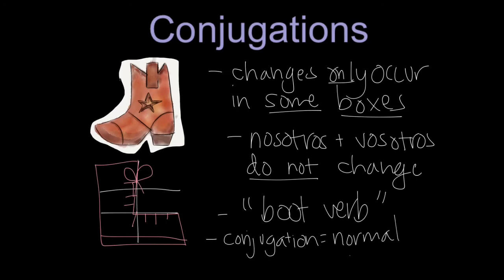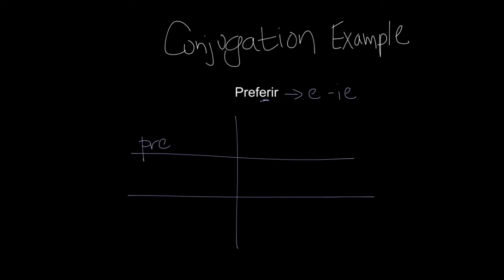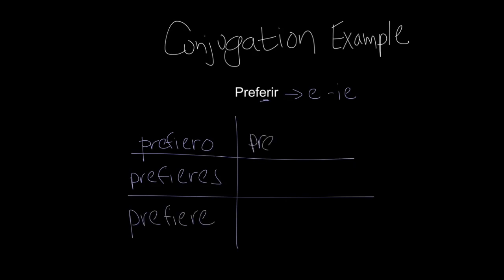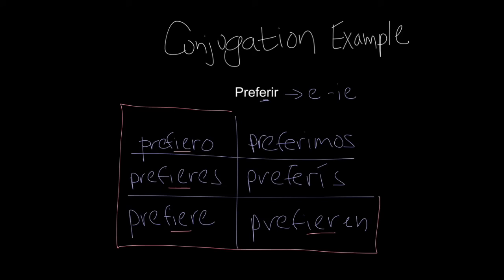Your actual conjugation endings stay the same as normal. For example, preferir is an E to IE stem change verb. The conjugations are: prefiero, prefieres, prefiere, preferimos (no change — we're outside the boot), preferís (with an accent), and prefieren. You'll notice the E changed to IE in all the boot-shape forms, leaving nosotros unchanged. That's a boot verb.